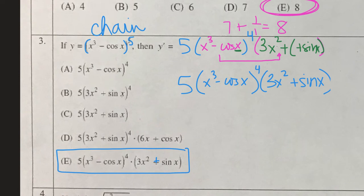Whenever we have parentheses raised to a power, you are going to use the chain rule: take the derivative of the power using the power rule, then derive whatever is inside. That way we've taken the derivative of everything.